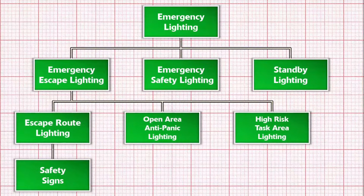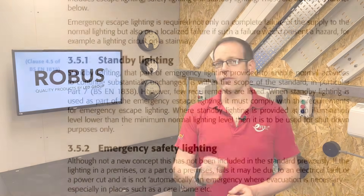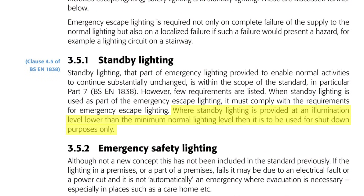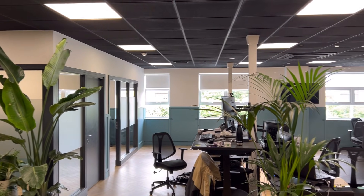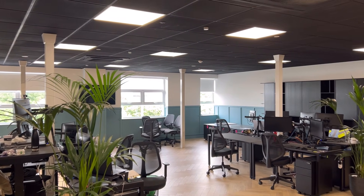Then moving across, we come to standby lighting — separate from emergency escape and emergency safety lighting. It's emergency lighting designed to allow normal activity to continue in the event of general lighting failing, minimising disruption to normal activities. However, if the light levels provided by standby lighting are lower than normal lighting, it should only be used to shut down or terminate processes. It differs from high risk task area lighting as it can be required for less dangerous activities and can be designed to keep activity going rather than just facilitate shutdown. The requirements for standby lighting are also far less stringent and specific.